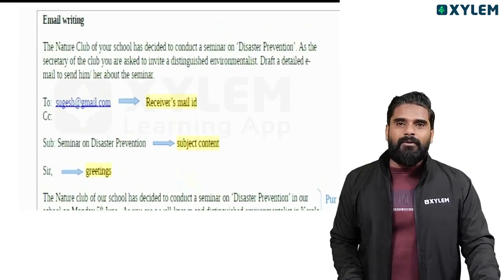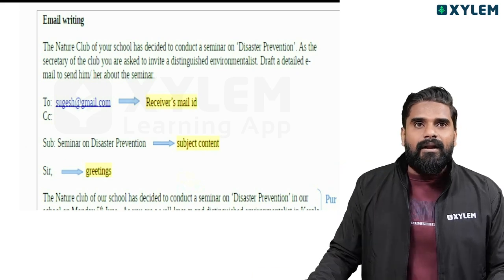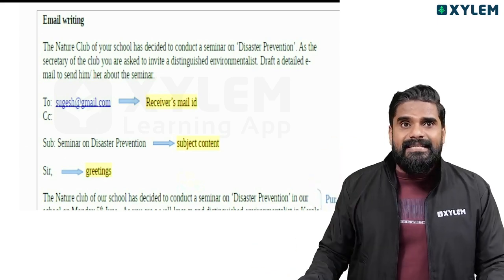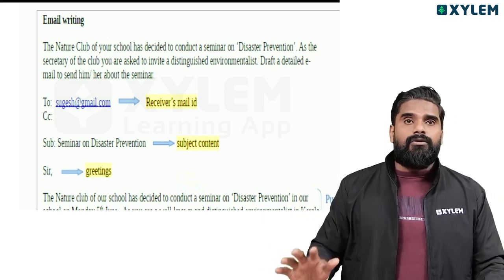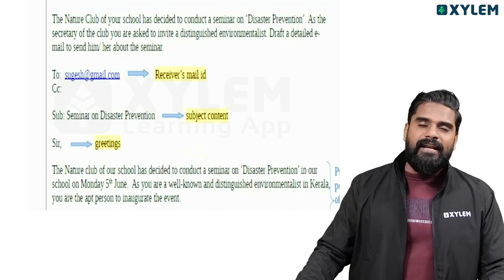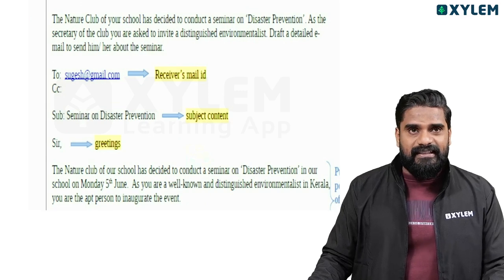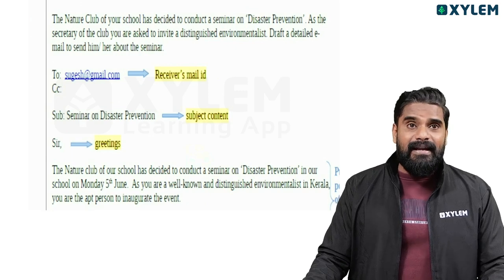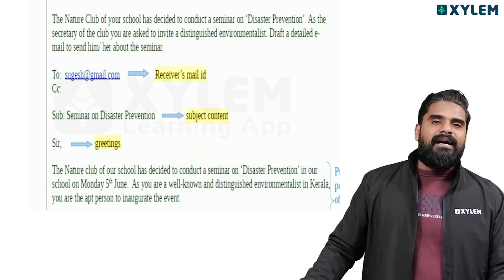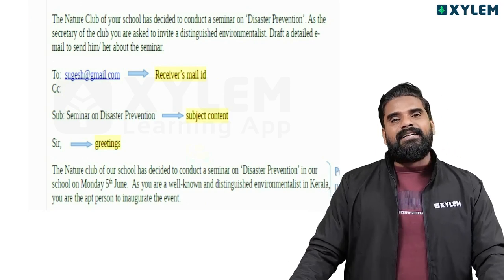For example, here is a question: The Nature Club of your school has decided to conduct a seminar on disaster prevention. As the secretary of the club, you are asked to invite a distinguished environmentalist. Draft a detailed email to send to him or her about the seminar. You can send the email — from address, sender's address, to address. Receiver's email: Mr. Ancon. CC and BCC are also fields available.